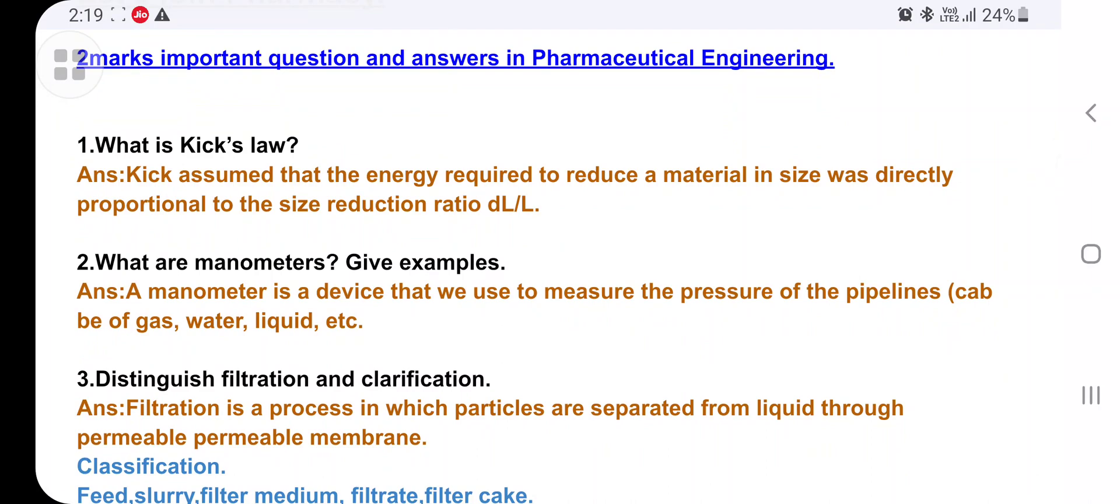What are manometers? Give example. A manometer is a device that is used to measure the pressure of pipelines. Examples: gas pipeline, water pipeline, liquid pipeline.